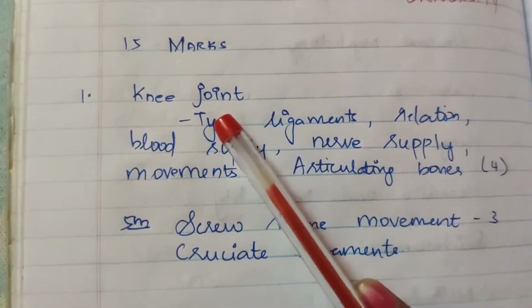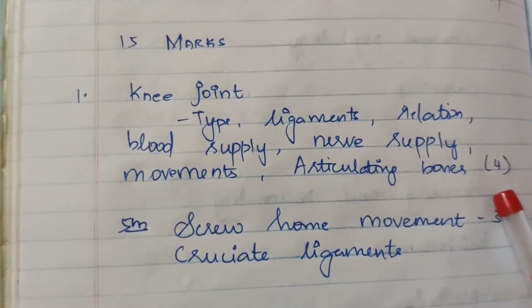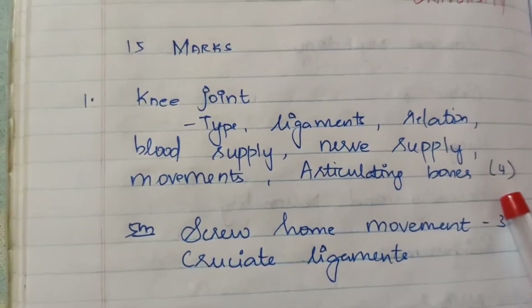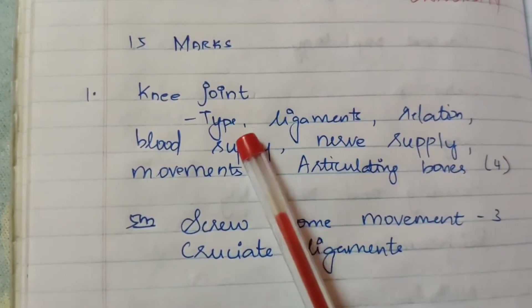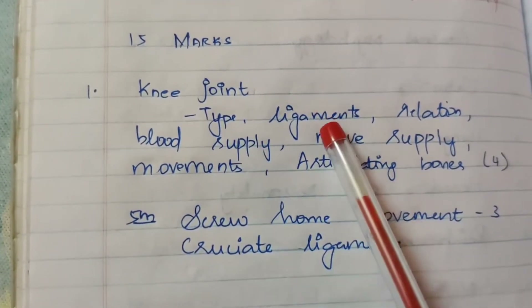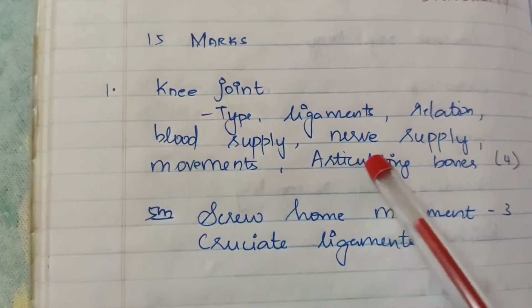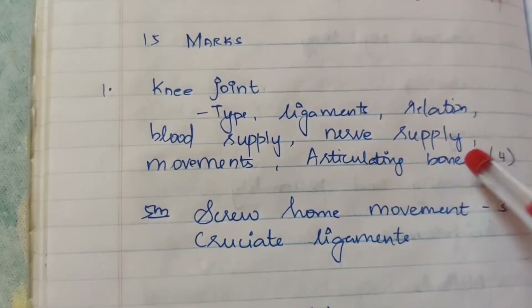First, for 15-mark questions, the key subtopics you should cover are: type, ligaments, relations, blood supply, nerve supply, movements, and articulating bones.